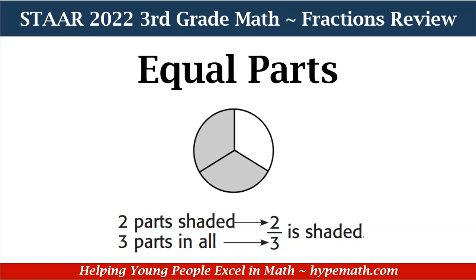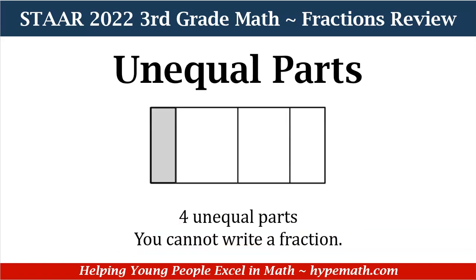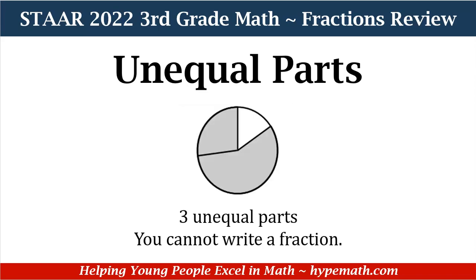Now that we see what it looks like to have equal parts, let's look at examples of unequal parts. Here is one — it's still a rectangle, but not all of our parts are equal, so we cannot write a fraction for this shape. Also, this one is still the same circle like what we had before. However, there are three unequal parts, and because of that, we cannot write a fraction. So remember: a fraction is part of a whole, and each part of the whole must be the same size.